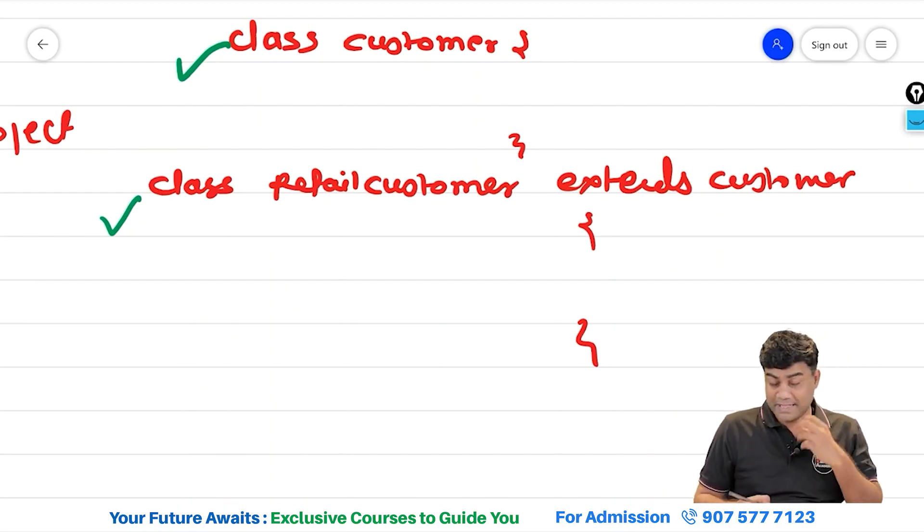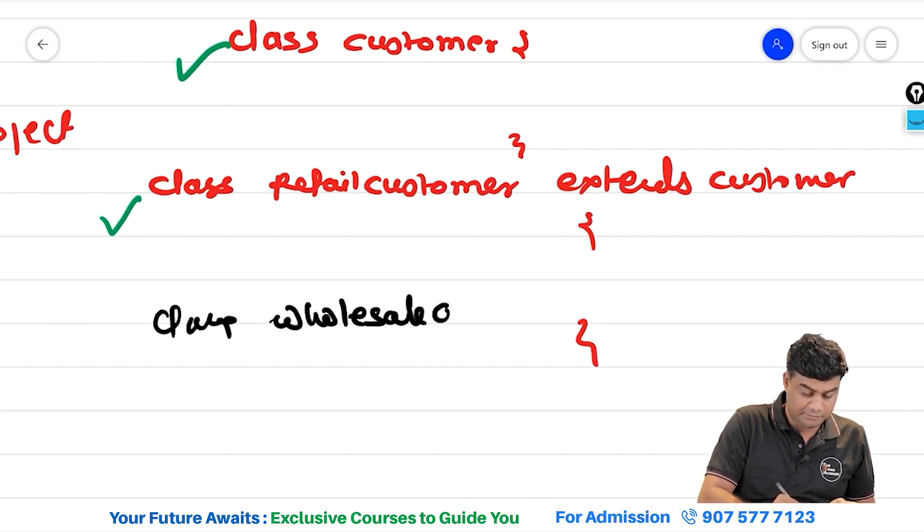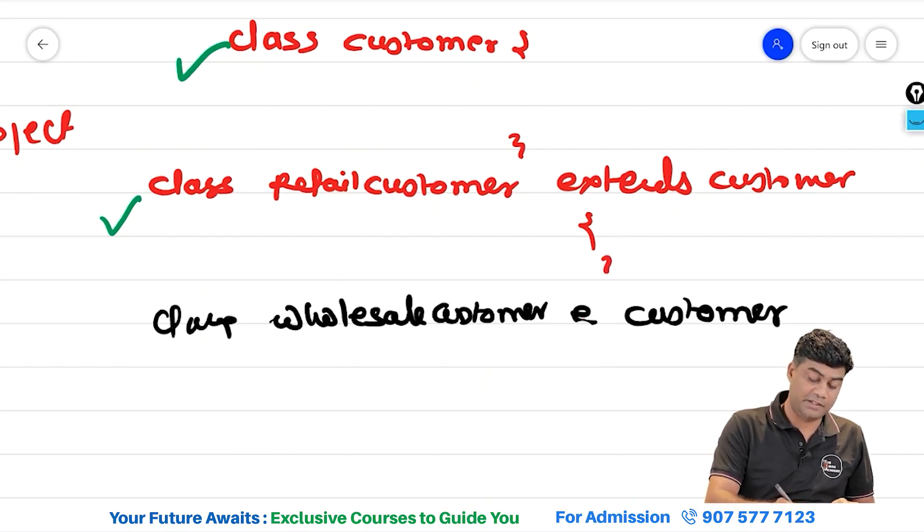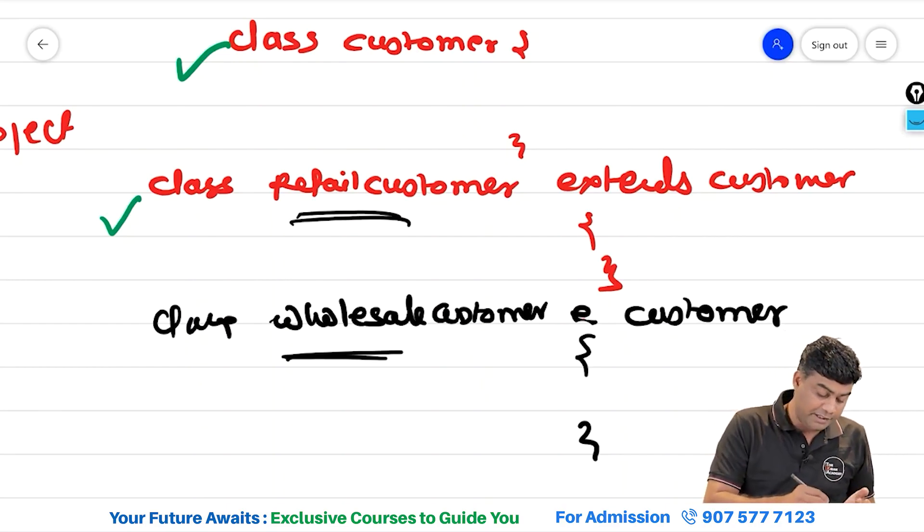But if you want to impress your interviewer, then you can write more things like class wholesale customer extends customer. In this case, there are two subclasses of customer. One is retail customer and another is wholesale customer because both people have age, location and address.